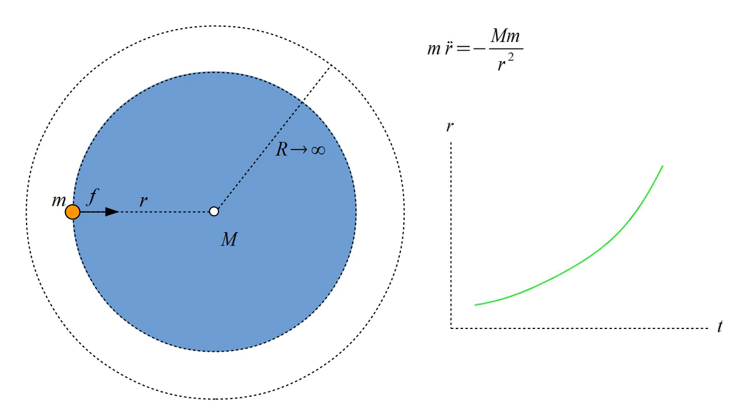The double dots denote acceleration. If you plot r versus time, then r single dot, the velocity, is the plot's slope, and r double dot, the acceleration, is essentially the plot's curvature. There's a link in the description to a video that discusses this in more detail.